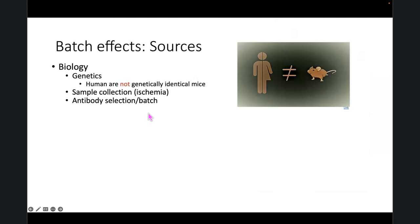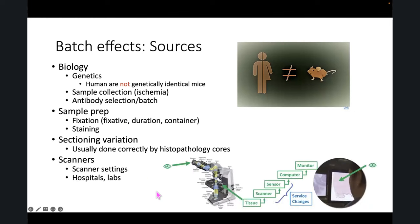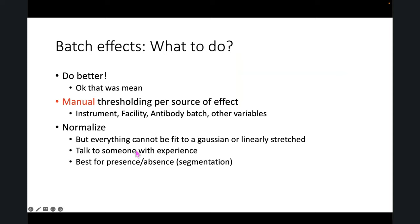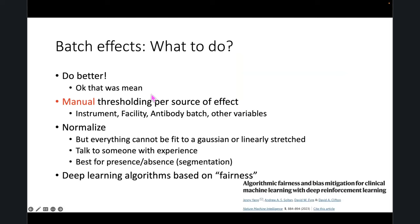Batching controls, biology and genetics — humans are not mice, things are hard. You need to pay attention to scanner settings and hospital labs. Sometimes you need manual thresholding depending on your source of variables. Normalization can't fix everything. There are deep learning algorithms based on fairness — a concept often applied to social uses of deep learning — but you can also use it to blind deep learning algorithms to submissions from different hospitals on different scanners.